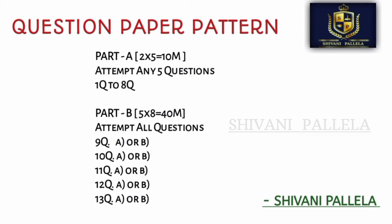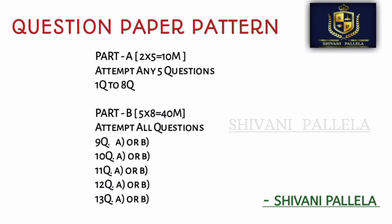Part A will consist of questions 1 to 8, and you need to attempt any 5 questions. Each carries 2 marks. Part B consists of 5 questions, and you need to attempt all 5 questions. In each question, you will have an internal choice — either A or B, and you should attempt any one.